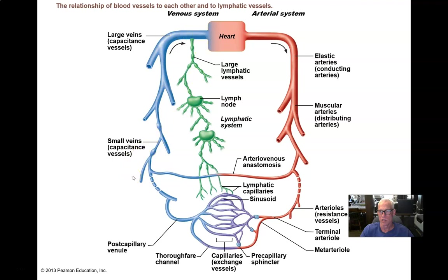Blood capillaries are leaky. You cycle blood through the system over and over, pumping the whole volume through the vascular system every minute, and yet a tiny bit of water leaks out of all the capillaries constantly. There's a whole other vascular system called the lymphatic system designed to scavenge up all the water that leaks out of the blood vessels and pipe it back into the cardiovascular system — dumping it back into a subclavian vein.